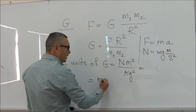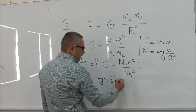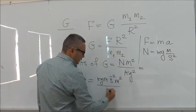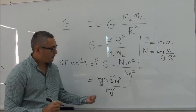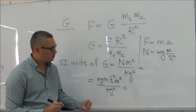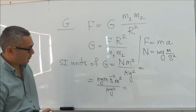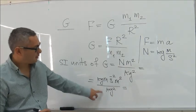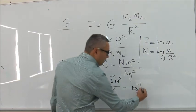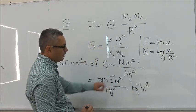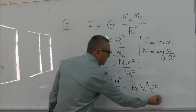Newton is kilogram meter per second squared times meter squared over kilogram squared. Now in principle you can leave your final answer as a fraction, but usually when we write down the units in base units we would write it as a multiplication of different powers. So here you have kilogram and kilogram squared, so this gives you inverse kilogram, then meter cubed, and seconds to the negative two. So these are the base units of the universal gravitation constant.